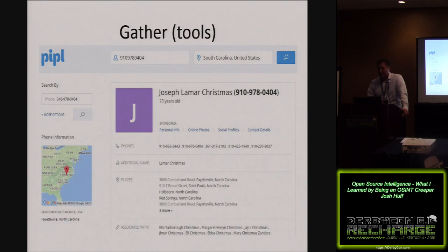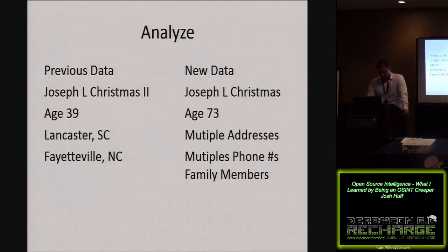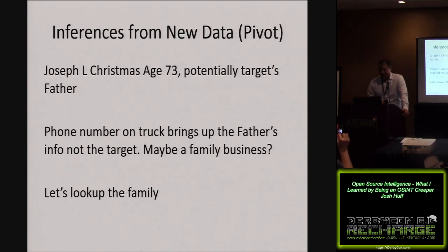Gather tools — Pitbull, an online search for information. We throw in the phone number from the truck and South Carolina as a starting point, and we're getting Joseph Lamar Christmas — 73 years old — a couple of extra phone numbers, a couple of addresses, and known associations, likely family members. So we look at that side by side, the previous information and the new information, and try to come up with some inferences. Joseph L. Christmas, age 73, is potentially the target's father. The phone number on the truck brings up the father's info and not the target — so maybe we're looking at a family business. Let's look at the family a little bit.